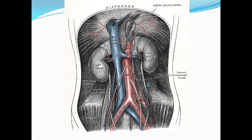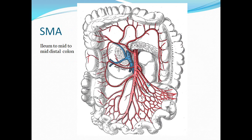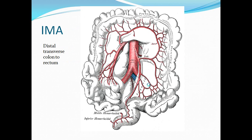This is a diagram from Gray's Anatomy showing your aorta, your inferior vena cava, your celiac plexus, and your superior mesenteric artery. You have a view of the celiac plexus showing its branches — this supplies mostly the stomach, the liver, and the spleen. You also have your superior mesenteric artery, which supplies the ileum to the mid-distal colon, and your inferior mesenteric artery, which supplies the distal transverse colon to the rectum.